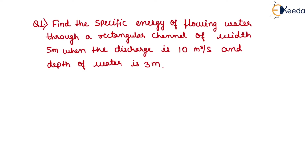Now we have to calculate the specific energy of flowing water here. First, we will write all the given quantities: width of the rectangular channel is 5 meters, discharge is 10 cubic meters per second, and depth of water is 3 meters.